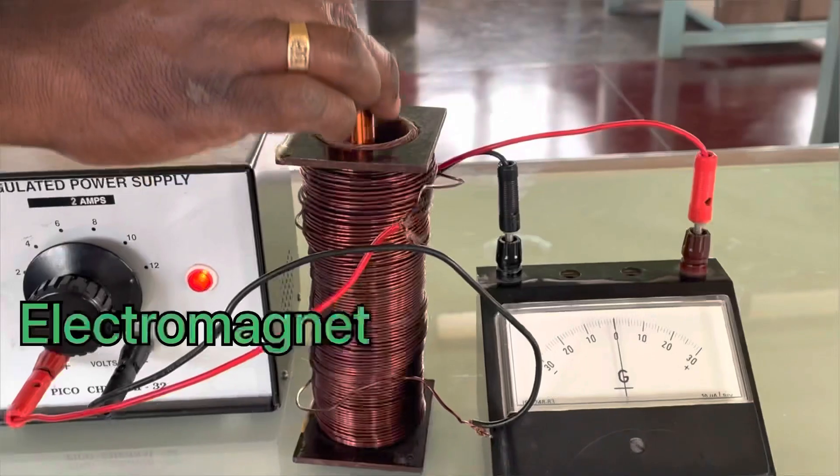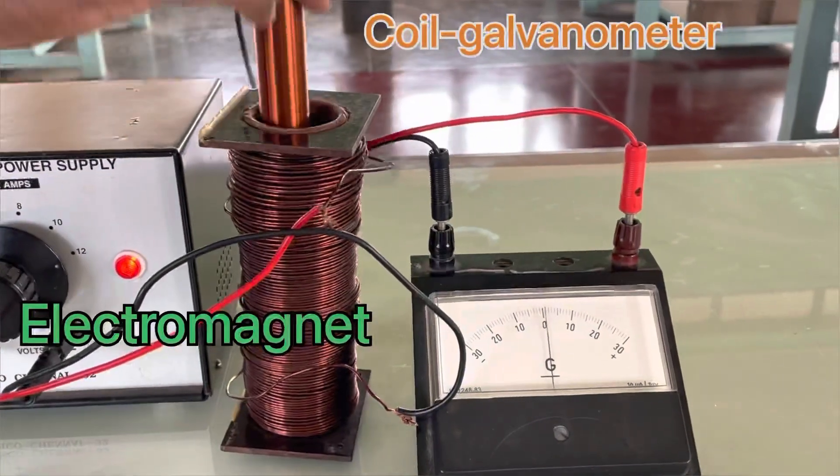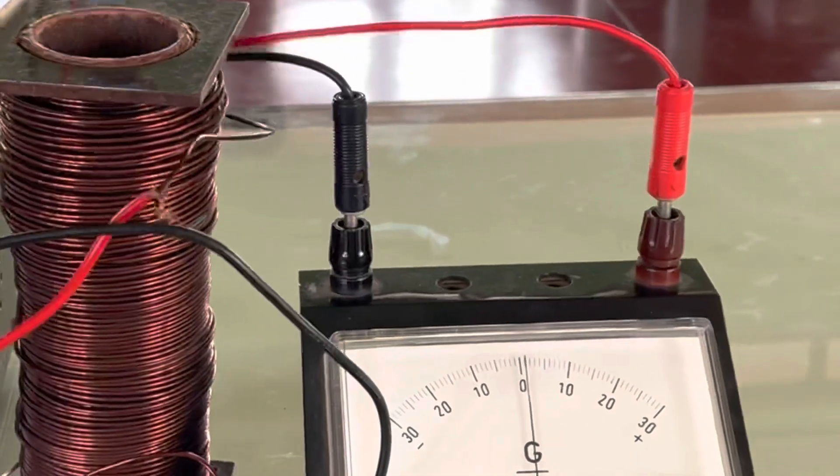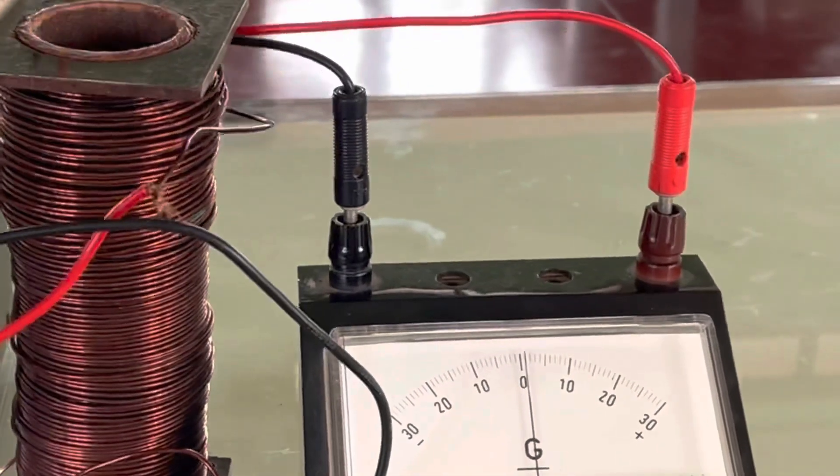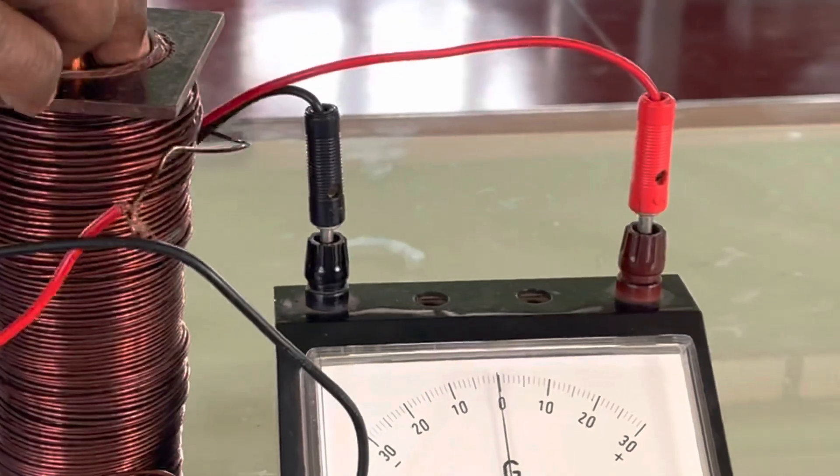The next experiment is coil coil experiment. Into the core of an electromagnet, a coil attached to a galvanometer is inserted and removed. We see a very small deflection in the galvanometer. It is due to the strength of magnetic field produced by electromagnet is less.